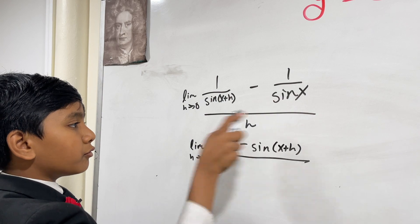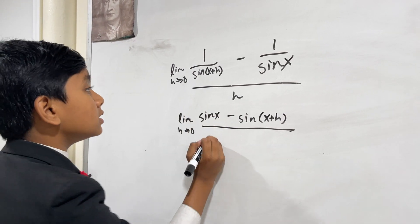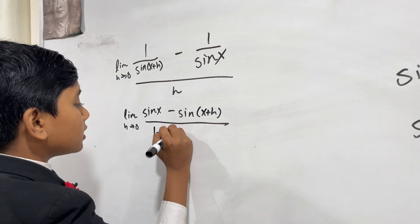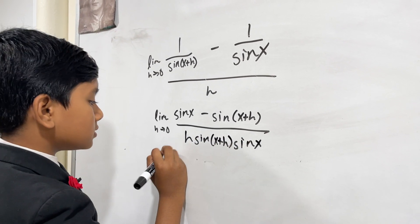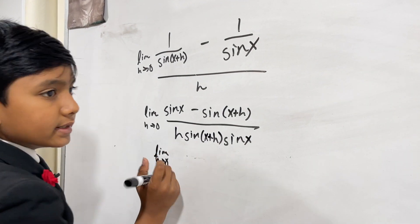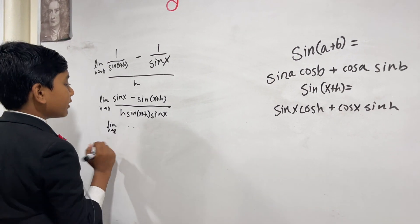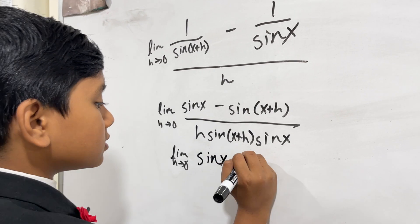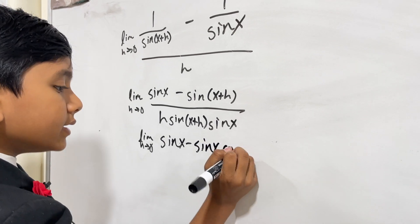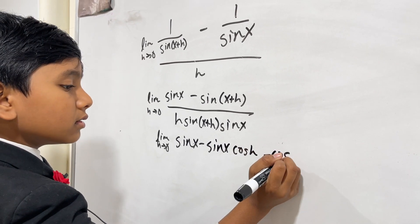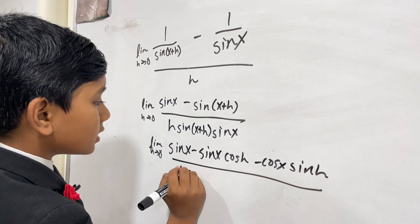Since we have one common denominator here and another large denominator h, we're going to multiply them. That gives us sine(x) minus sine(x + h) over h times sine(x + h) times sine(x). Now we can expand sine(x + h) as sine(x)cosine(h) plus cosine(x)sine(h), and spread the negative sign.